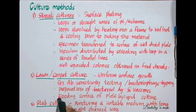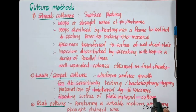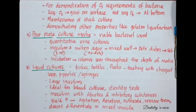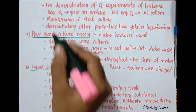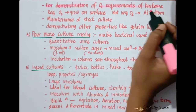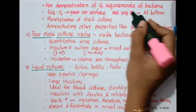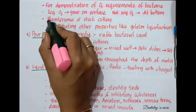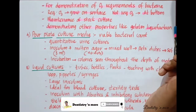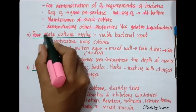The next method is stab culture. Here we puncture a suitable medium with a long straight charged wire. The stab culture is used for demonstration of oxygen requirements of bacteria — bacteria that require oxygen will grow on the surface, and those that do not require oxygen will grow at the bottom. They are also useful for the maintenance of stock cultures and for demonstrating other properties like gelatin liquefaction on appropriate media.